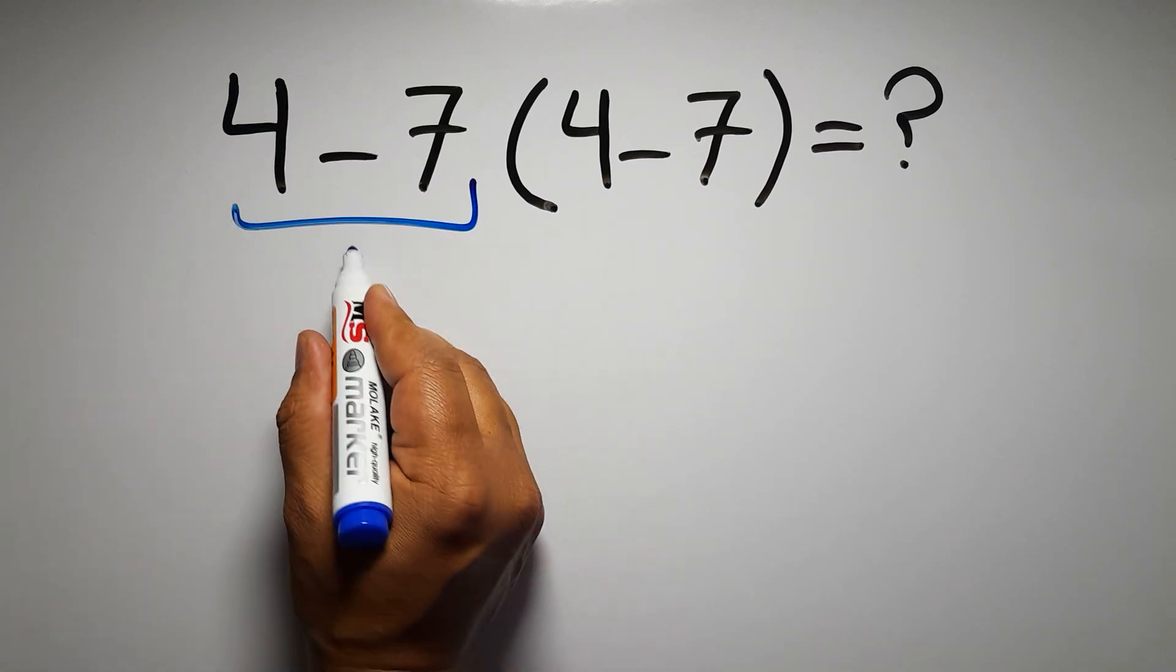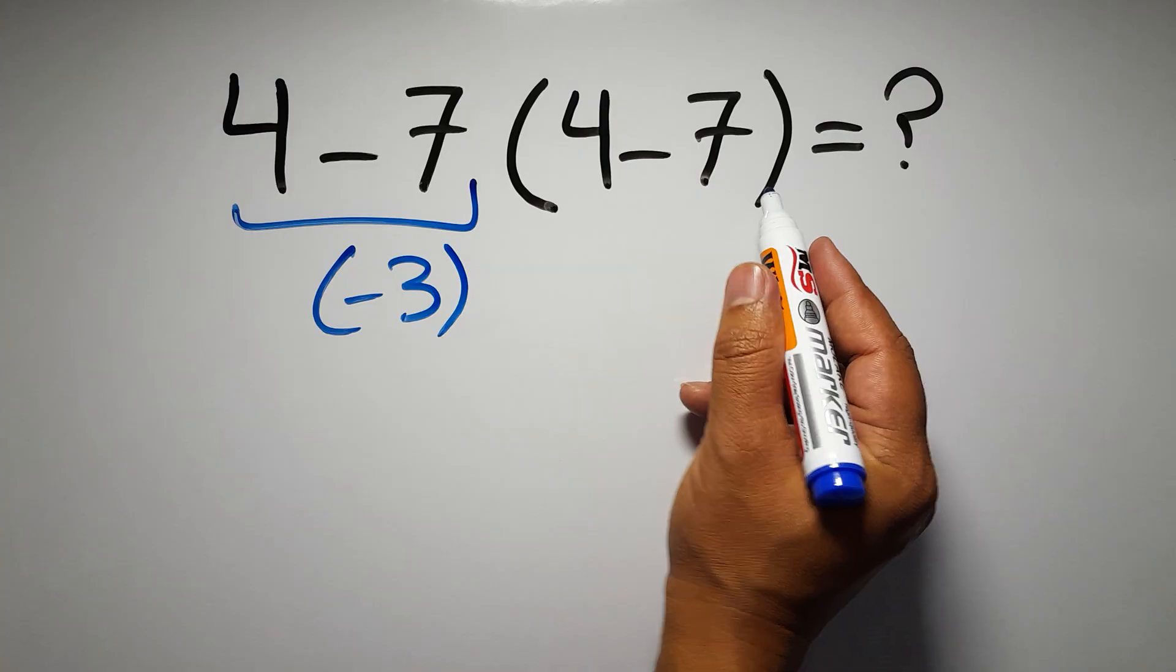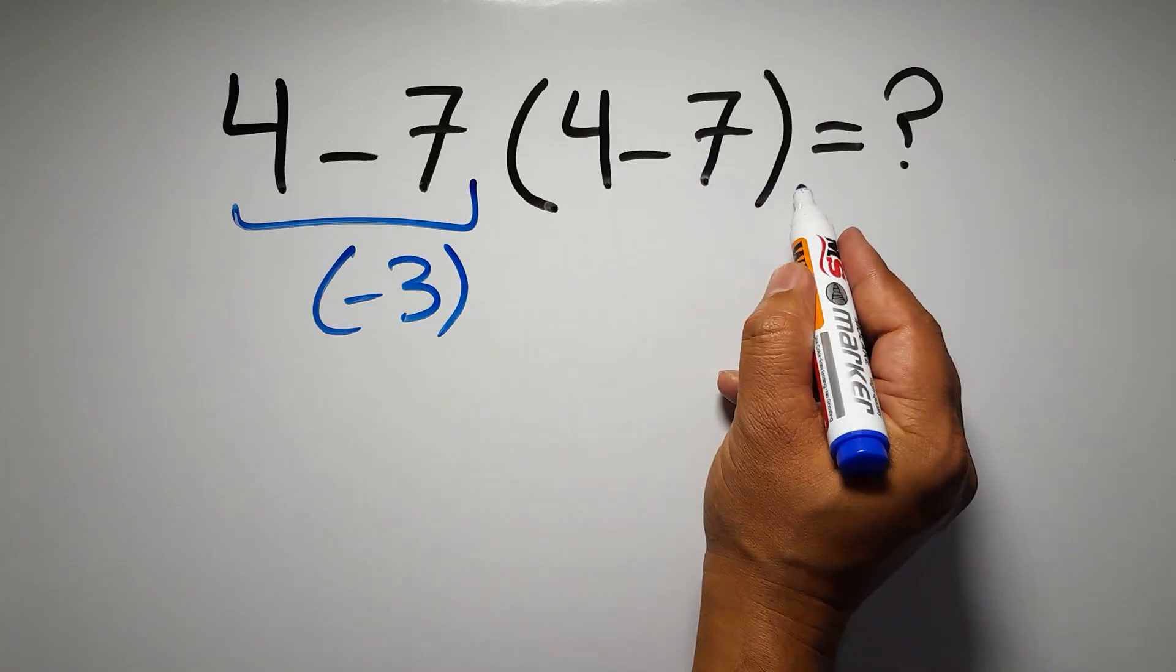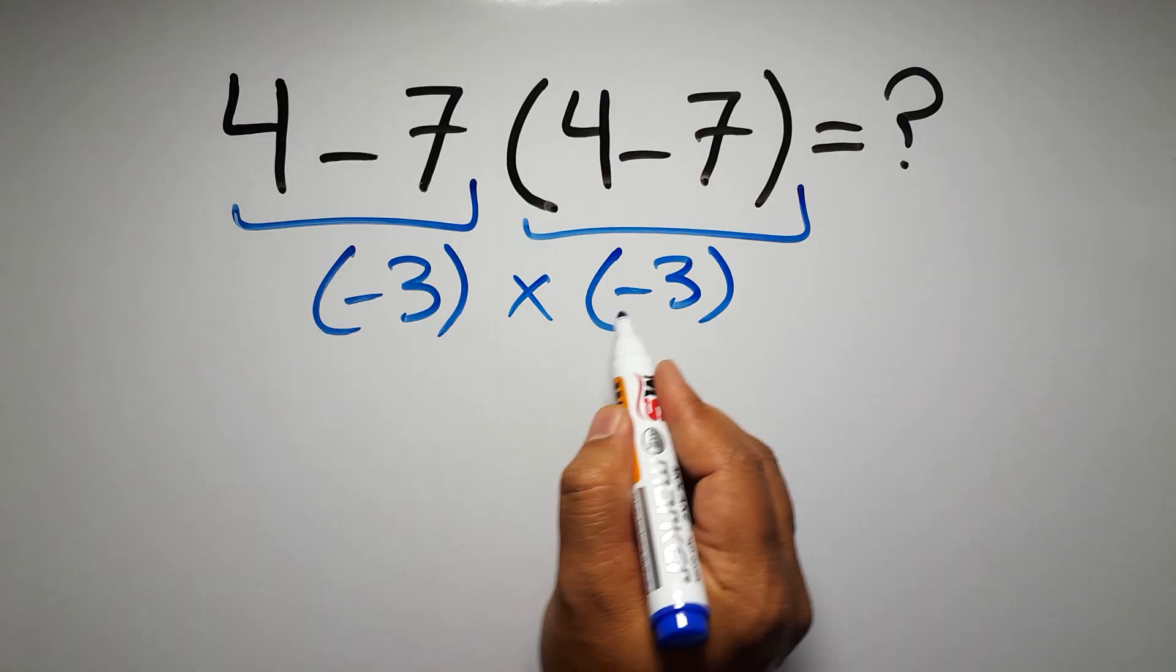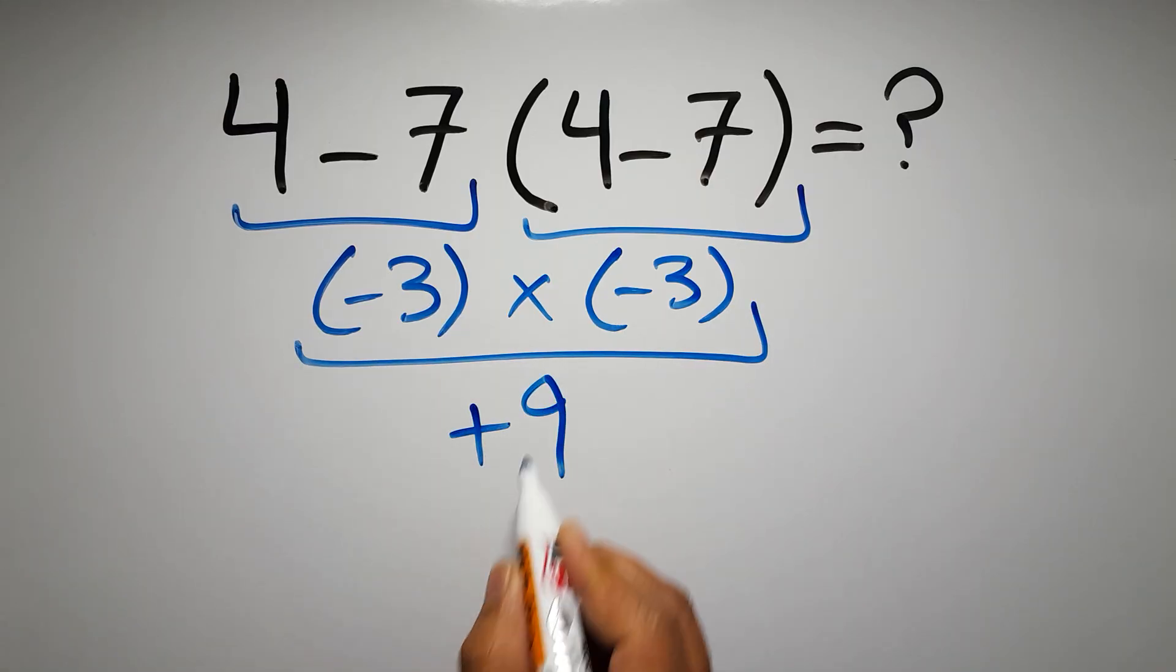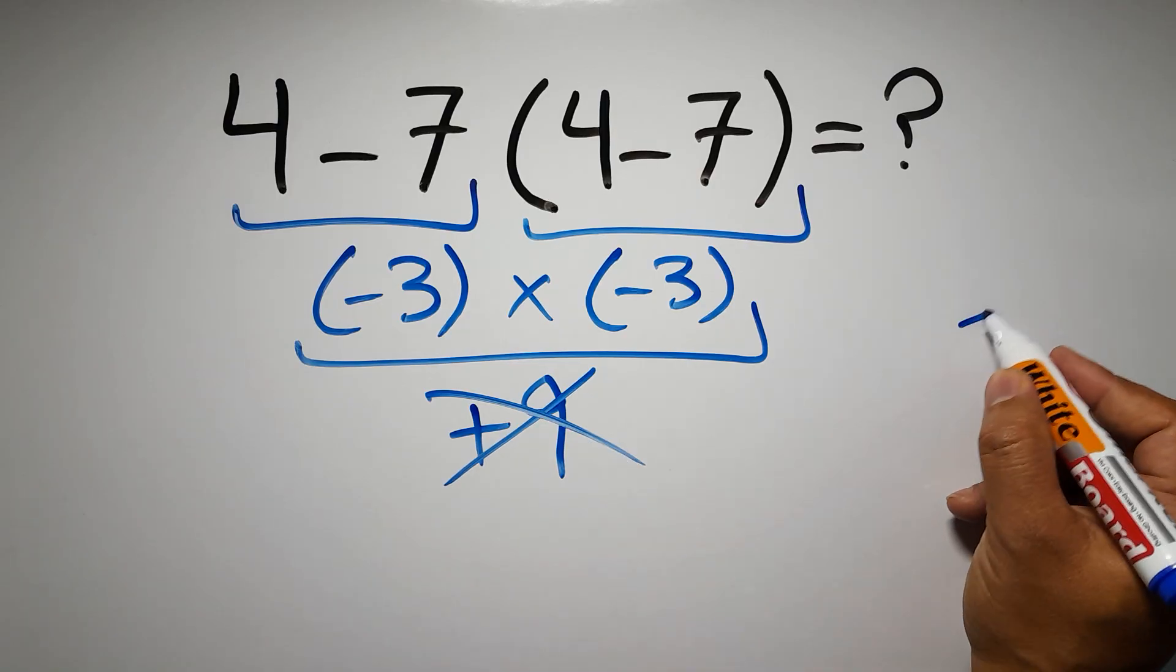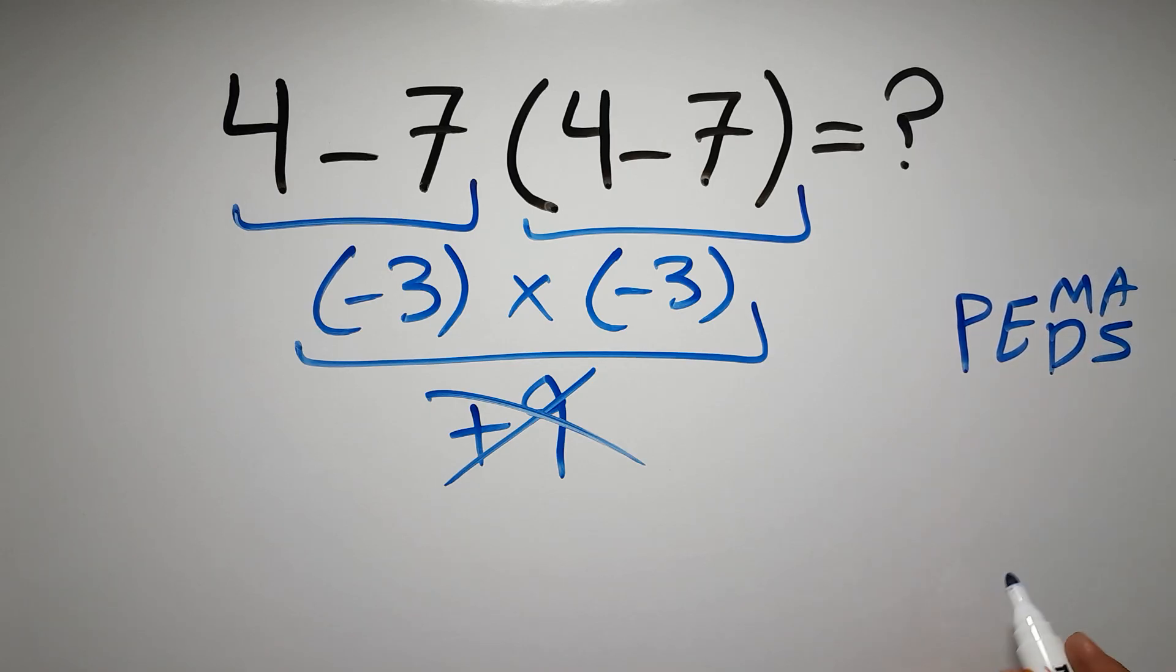Four minus seven gives us negative three, and here inside these parentheses again we have four minus seven. Negative three times negative three equals positive nine, but this answer is not correct because according to the order of operations, first we have to do parentheses, then exponents, then multiplication or division, and finally addition or subtraction.